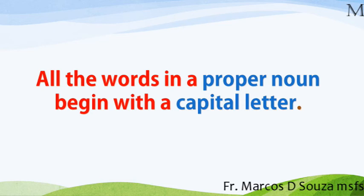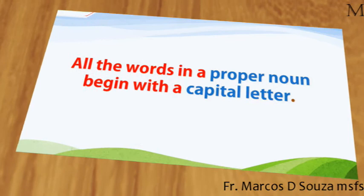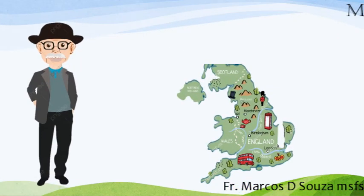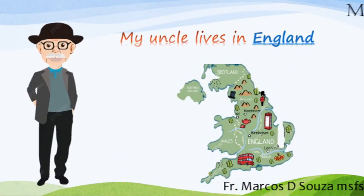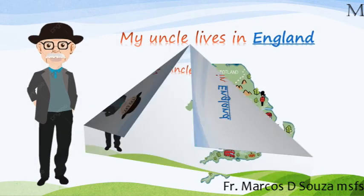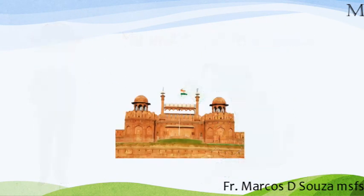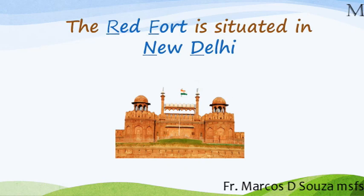For example: My uncle lives in England. The Red Fort is situated in New Delhi.